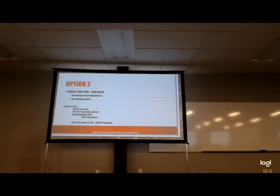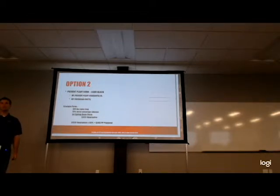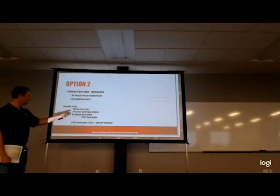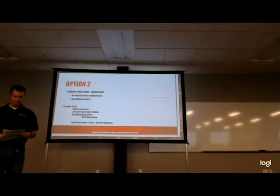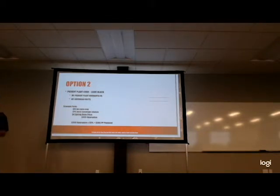The second option here is to call prevent plant and leave it black. We know what our prevent plant guarantee is. You can go field by field with your insurance agent - if I leave this one blank, what's that one going to pay me? And it's that way whether you have enterprise units or not. Figure out what those numbers are. Maybe that helps you choose if the weather isn't just deciding for you where you can plant and where you're not going to plant. If our guarantee is $555, we're multiplying by 55%, we've got $305 coming as a payment. That's not terrible - I think that covers a lot of land costs. If you've got some big machinery payments, we might have trouble making that cover. For some of you, $305 might look great - and for some of you, it might not. So know your numbers.